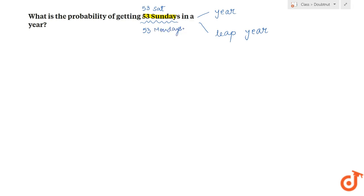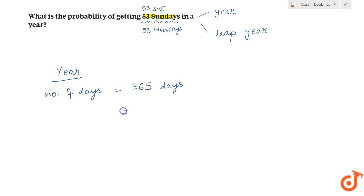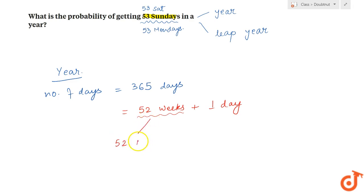Let's first understand it for a standard year. In a standard year, the number of days is 365. Now, 365 days consists of 52 weeks and one remaining day. 52 weeks means we already have 52 Sundays, 52 Mondays, 52 Tuesdays, 52 Wednesdays, 52 Thursdays, 52 Fridays, and 52 Saturdays.